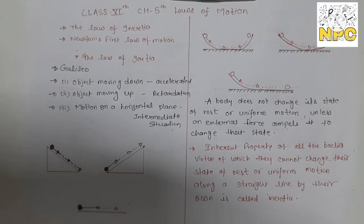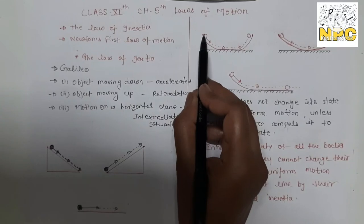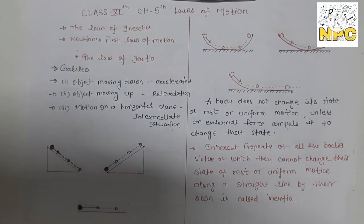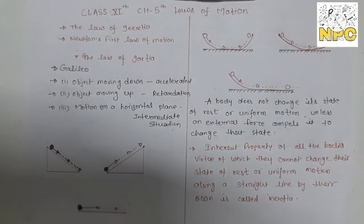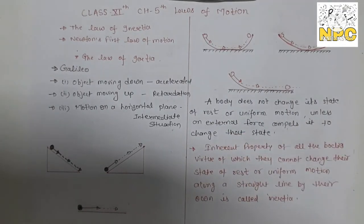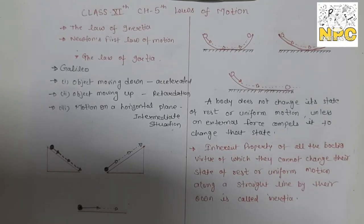In the second example, we have taken two inclined planes. We throw the ball from the upper side of the first inclined plane, and it moves up the second inclined plane covering the same height. In the second case, when the angle of the second inclined plane is decreased, the ball travels further along the slope to reach the same height.